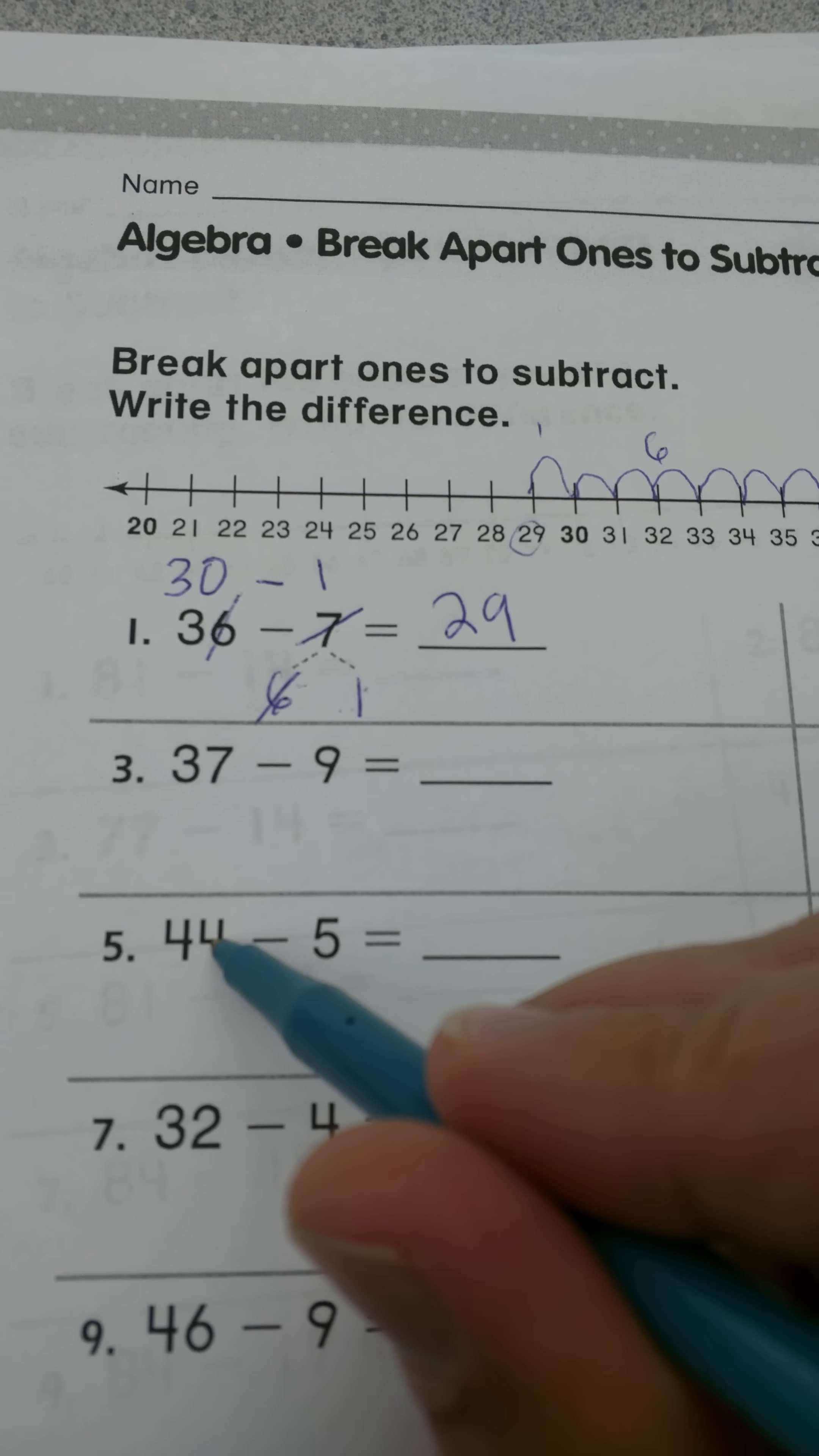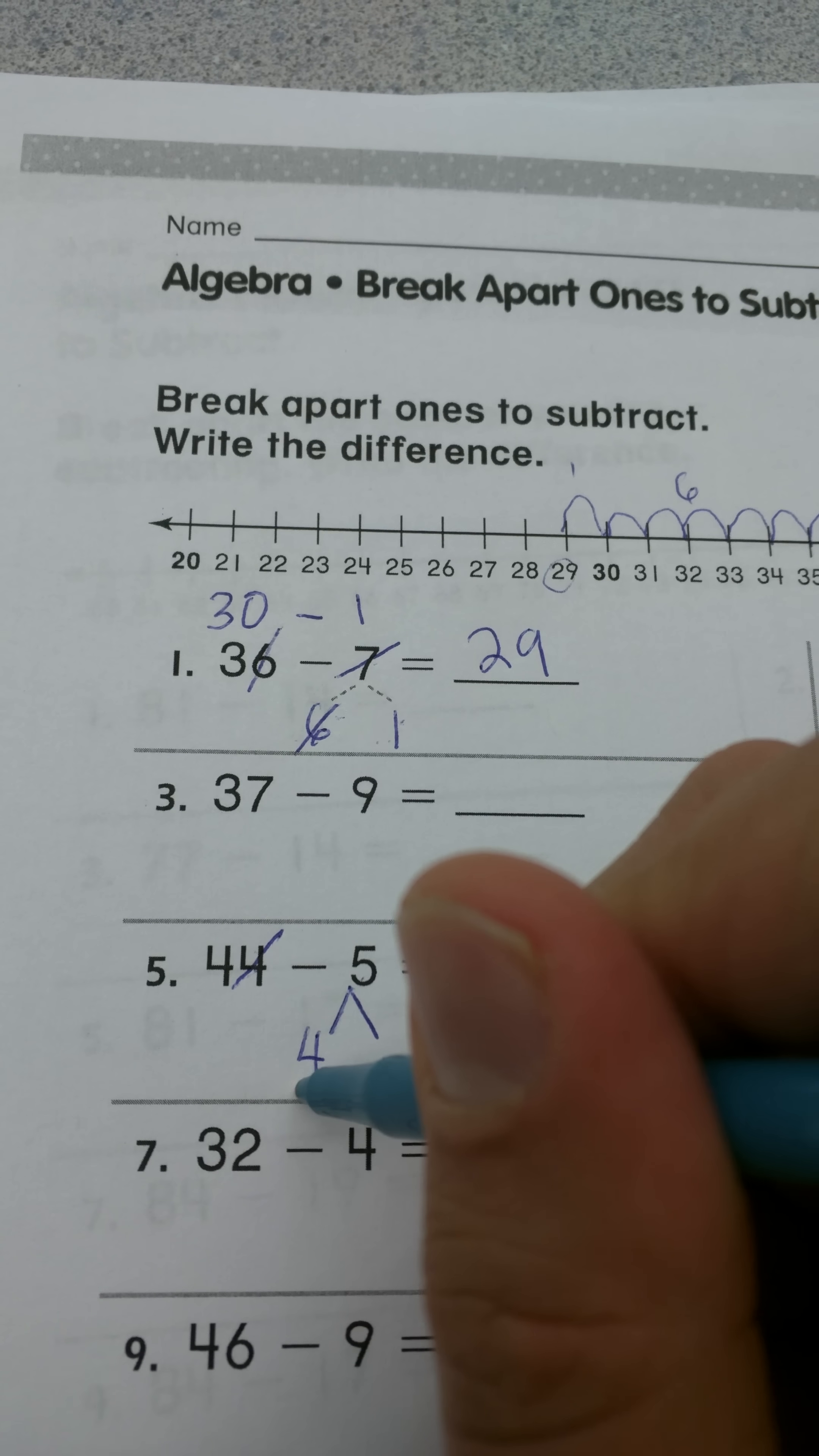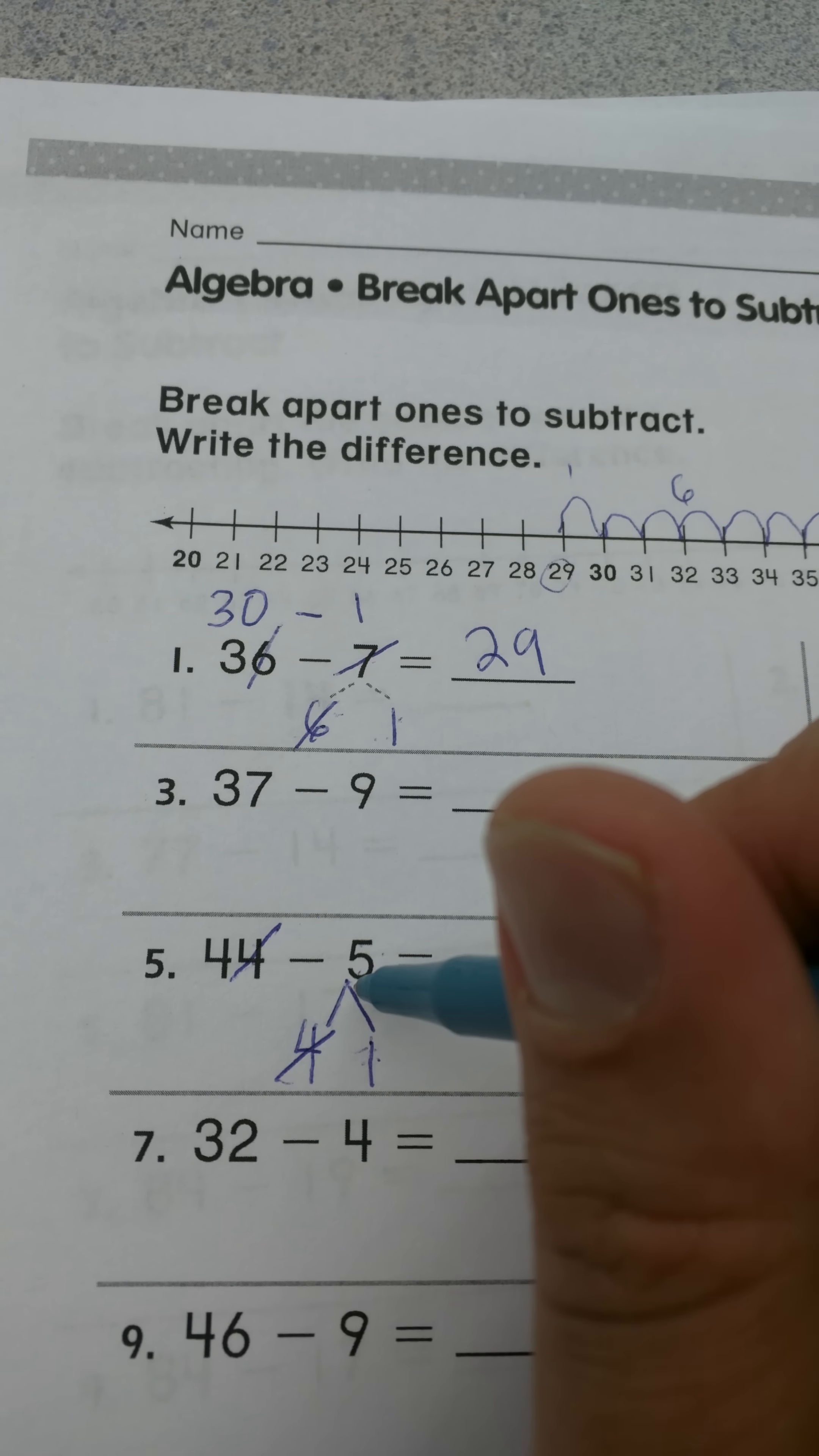So again, I'm looking at the ones here. I have four ones. So I'm going to take four ones out of the five. So there I go. Cross out this four. I'm going to cross out this four. And then I have one left over. Four plus one makes five. So remember these two numbers should add up to equal the same number we're coming from.